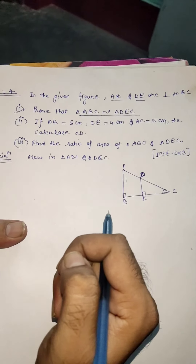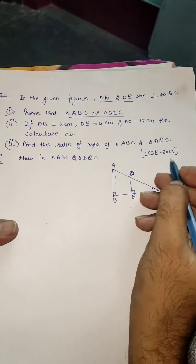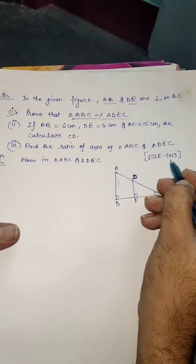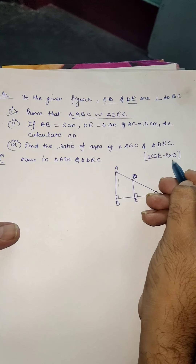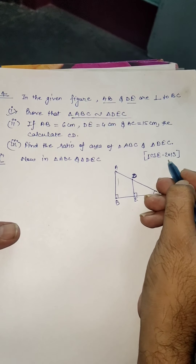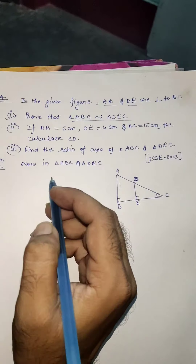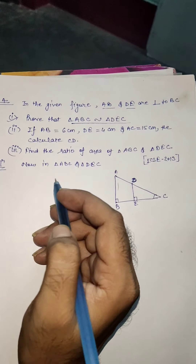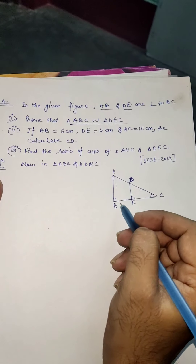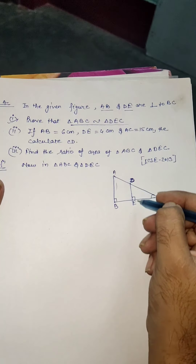Good morning everyone. This is question number from the ICSC model paper — it's a 2030s question. The question is: in the given diagram, the sides AB and DE are both perpendicular to side BC.